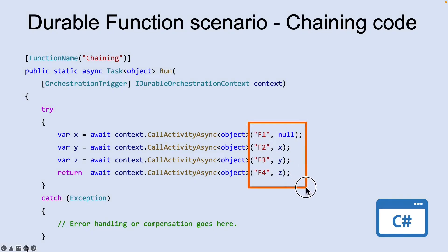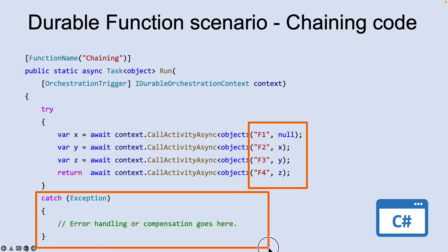The values F1, F2, F3, and F4 are the names of other functions in the Function app. Control flow is implemented by using normal coding constructs — code executes top-down and can involve existing language control flow semantics, conditions, and loops. Error handling logic can be included in Try, Catch, Finally blocks.